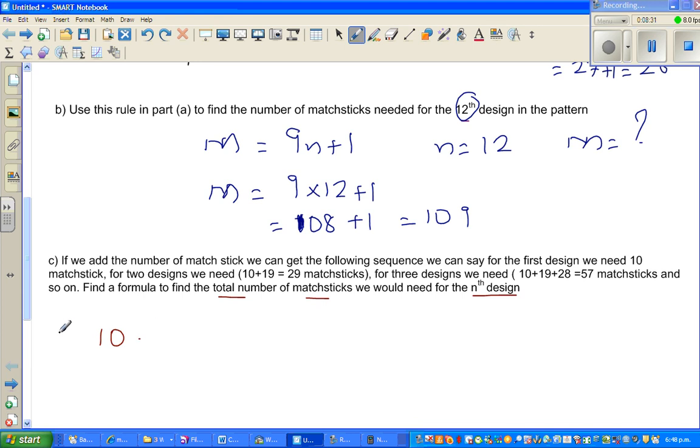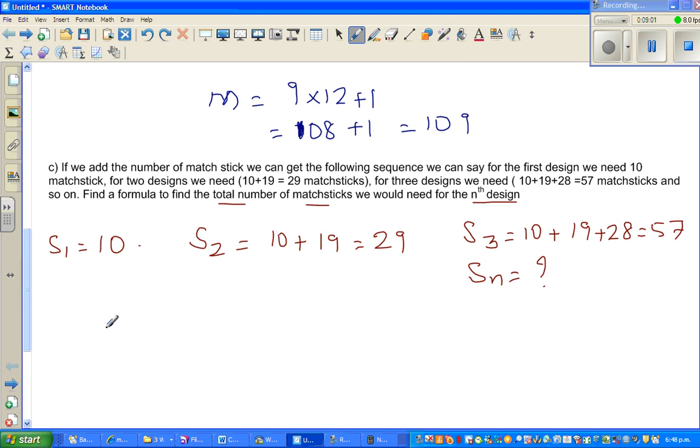Say, if you have only one design, so let me write the sequence. The sequence is 10 plus, so if you have only one sequence, your S1 is 10. If you have two designs, S2 is 10 plus 19, which is 29.